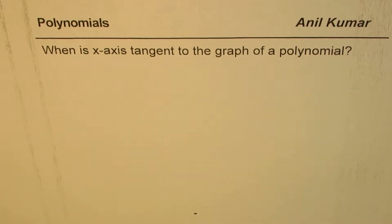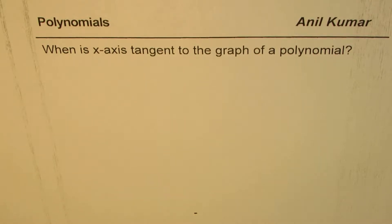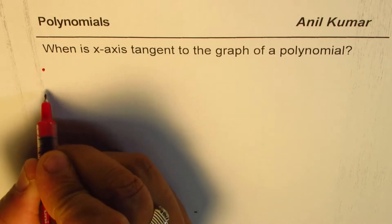I'm Anil Kumar and let me first thank my subscribers for posting excellent questions on my YouTube channel. This question is really interesting: when is the x-axis tangent to the graph of a polynomial? That is how I framed the question. The student really wants to understand that when sketching a polynomial, how come the x-axis is sometimes a tangent, sometimes not, and sometimes tangent but the graph crosses. So there are many combinations.